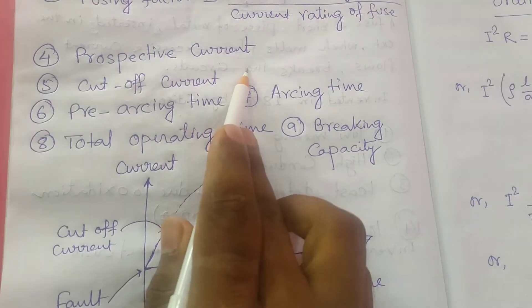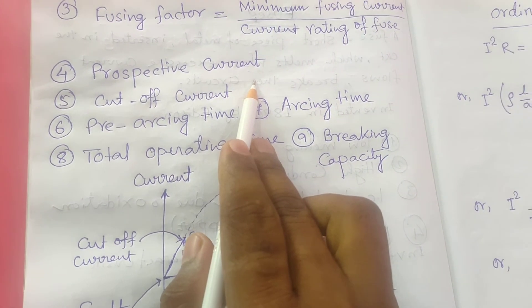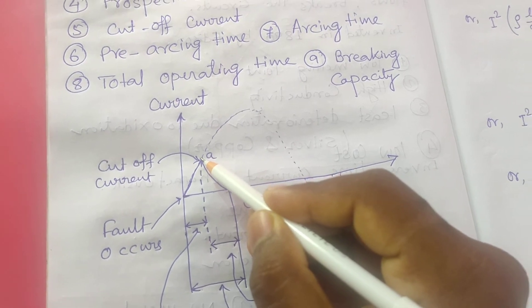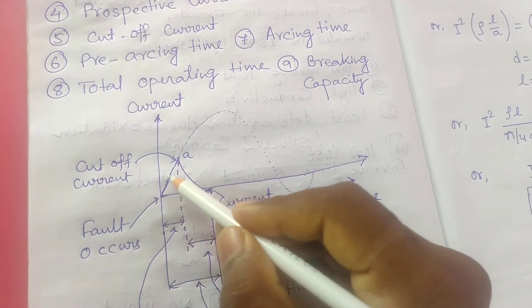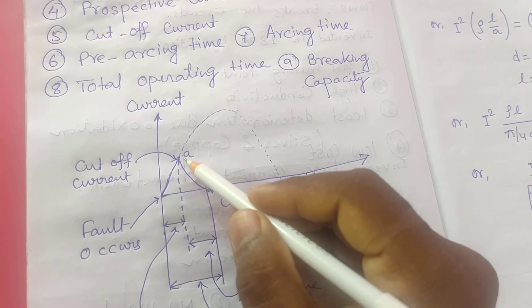What is the prospective current? Prospective current is an RMS value of the first loop of the fault current. It is the RMS value of the first loop of the fault current obtained if the fuse is replaced by an ordinary conductor of negligible resistance.